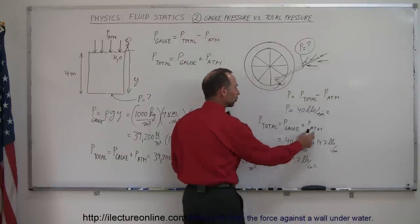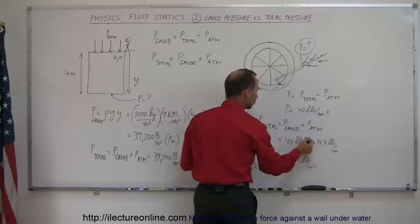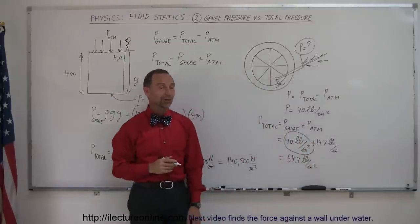But then the gauge pressure subtracts that, because we have air pressure pushing in the other direction. And so therefore, you're only measuring the gauge pressure, and that's also why it's called the gauge pressure.